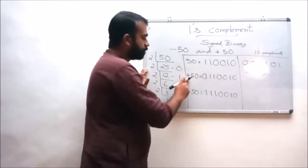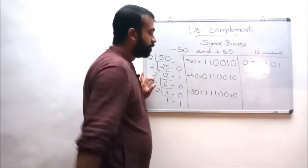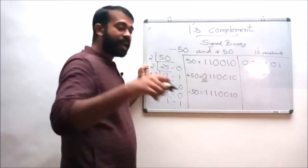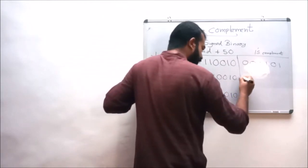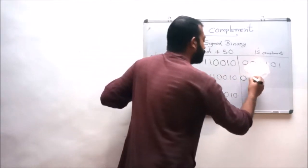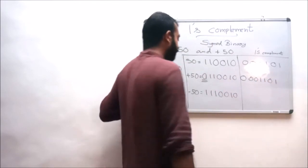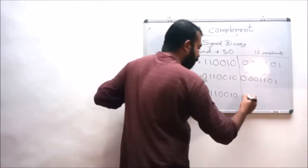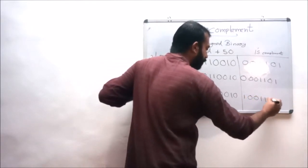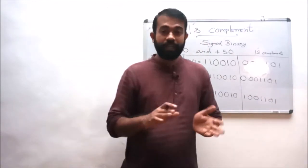Plus 50 is 0 1 1 0 0 1 0, so the first bit 0 should remain intact, and the rest should be inverted — that is 0 0 1 1 0 1. And finally, the one's complement of minus 50 is 1 0 0 1 1 0 1. This is how we convert a binary number into its one's complement equivalent.